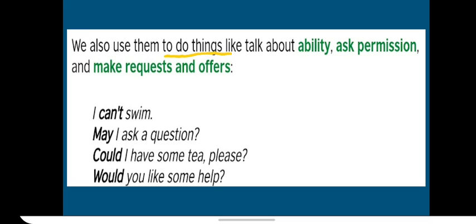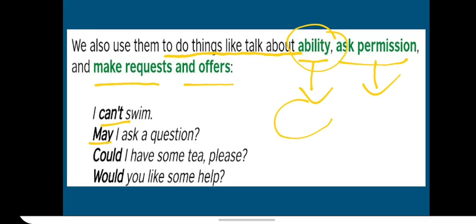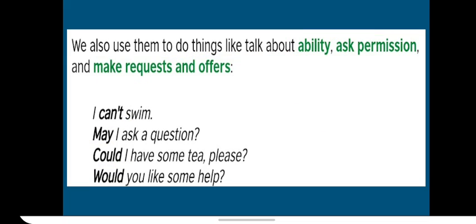Likewise, we also use them to do things like talk about ability, ask for permission, or make requests and offers. When you want to talk about capability or ability, we use modal verbs like I cannot swim. So here we're talking about his ability. When you're asking permission, normally we use the word may, but these days we can also use the word can. Can I ask a question? When you're making requests to someone, we usually use could. Could I have some tea, please? And the word would when you're offering someone help. Would you like some help? Would you like to drink a cup of coffee?